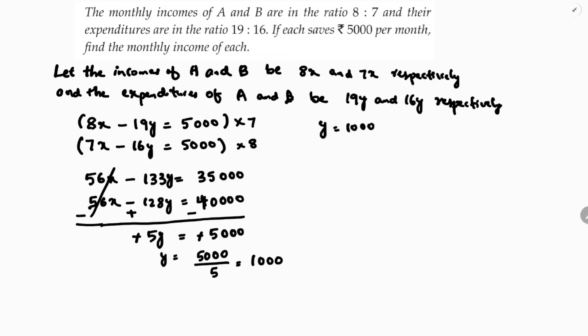Now if y is 1000, take any one equation and substitute. So 8x minus 19y, first equation I'm taking, y is 1000, equals 5000.